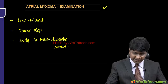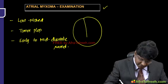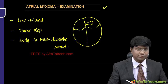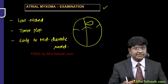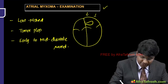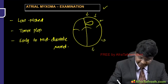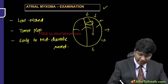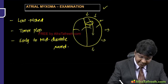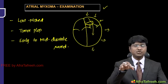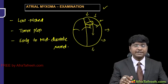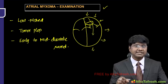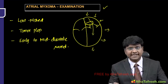Why is the tumor plop heard? Because the atrial myxoma originating from the interatrial septum — when blood is trying to move from the atria to the ventricle during diastole — causes the tumor to hit the mitral valve annulus. The sound produced is a low-pitched tumor plop occurring during diastole of the ventricle, hence it is a diastolic sound.